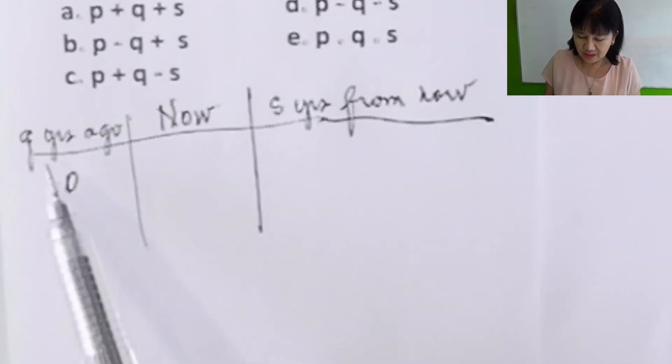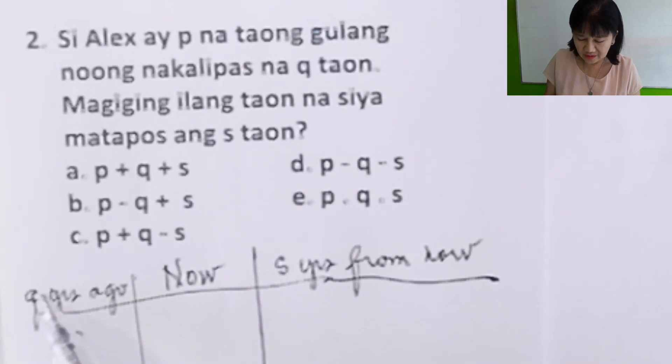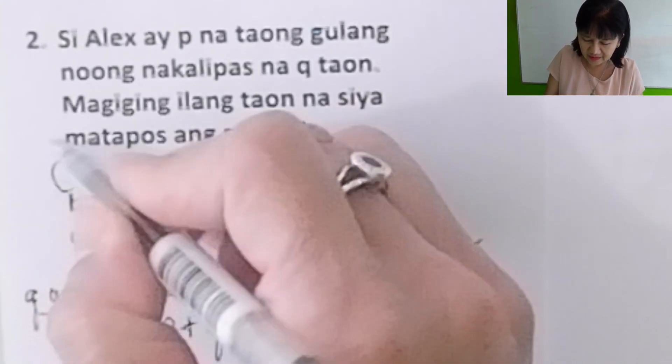Let's repeat: Alex was P, Q years ago. Here, Q years ago he was P, therefore now he is P plus Q. Remember, Q years ago he was P, so now he is P plus Q. S years from now, you will add S to now. This is now, and then S years from now. The correct answer is P plus Q plus S, letter A.